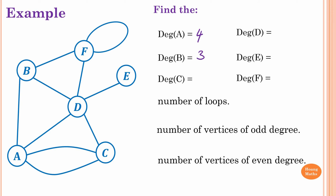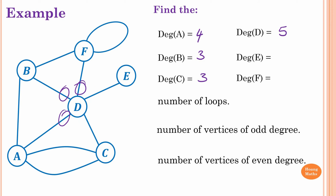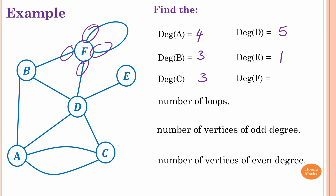For vertex C, we have one, two, three — degree of three. For D, we have one, two, three, four, five — so the degree of D is five. For E, we have only one, so the degree of E is one. For F, we count one, two, three, four — so the degree of F is four, because the loop contributes two degrees.